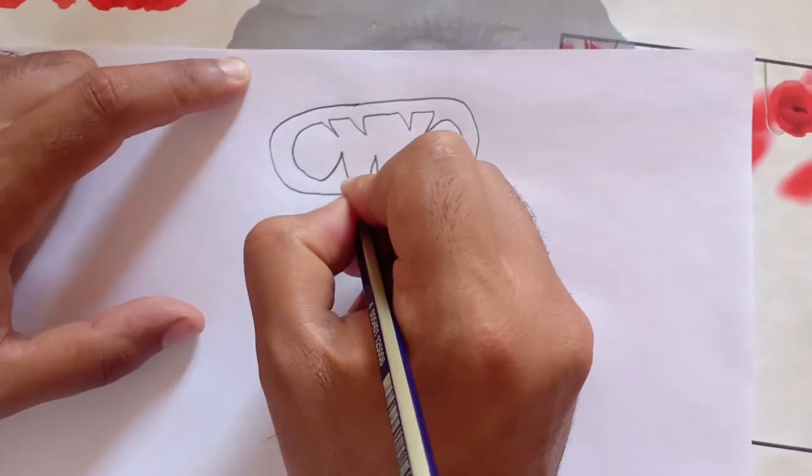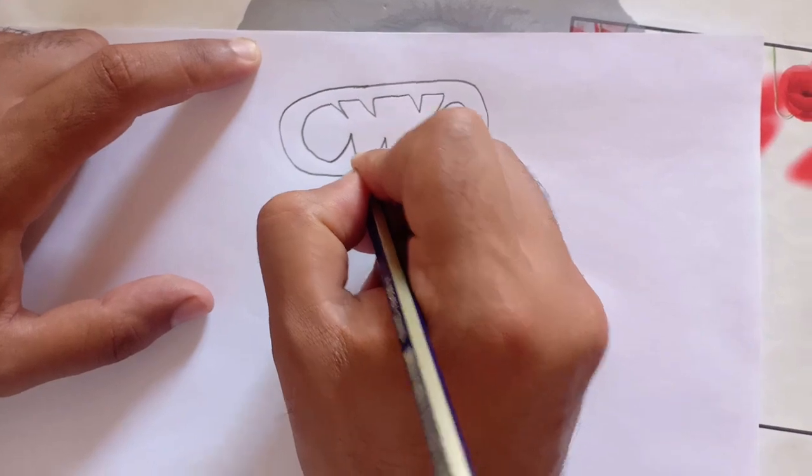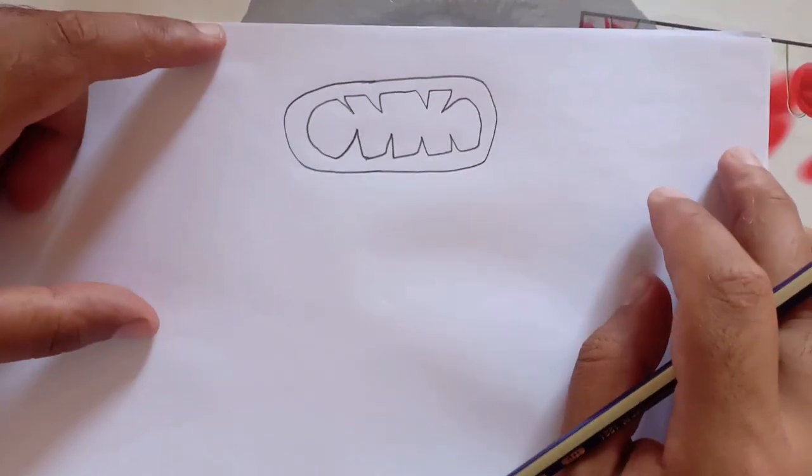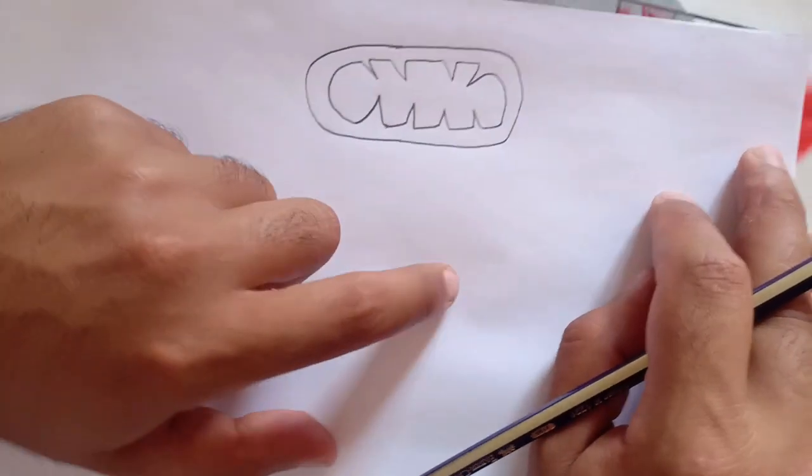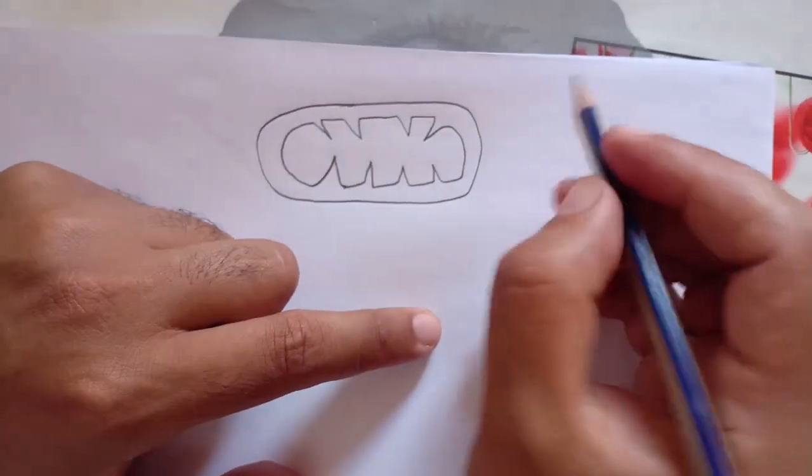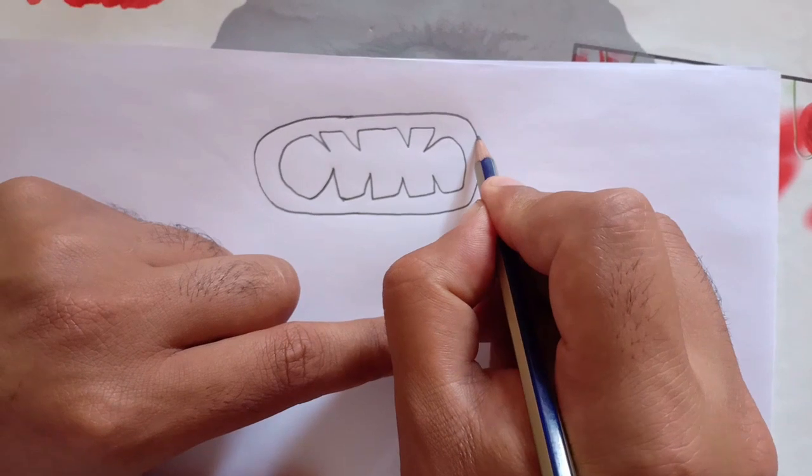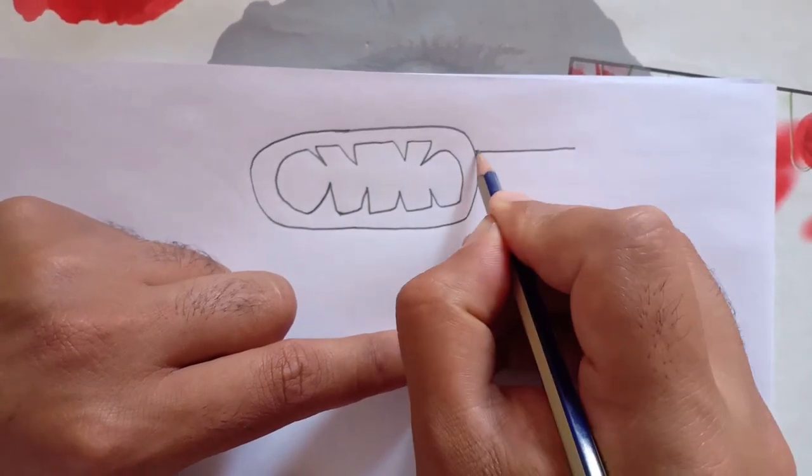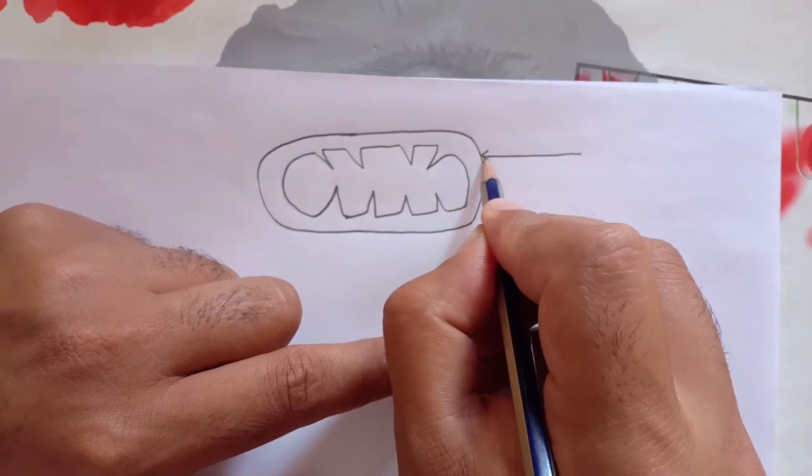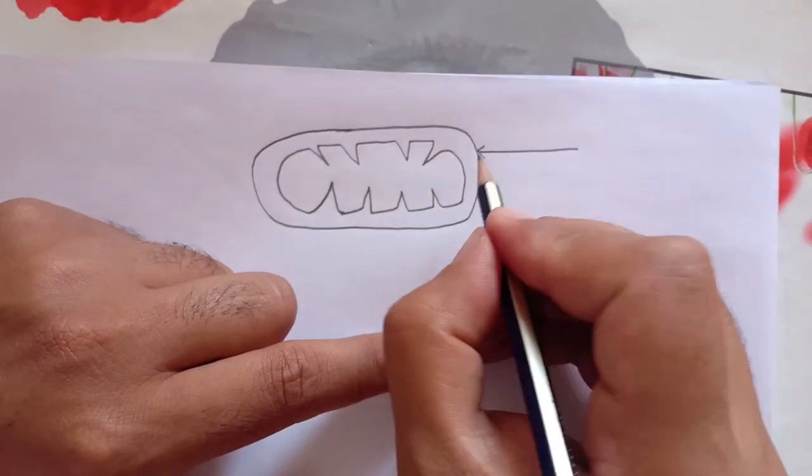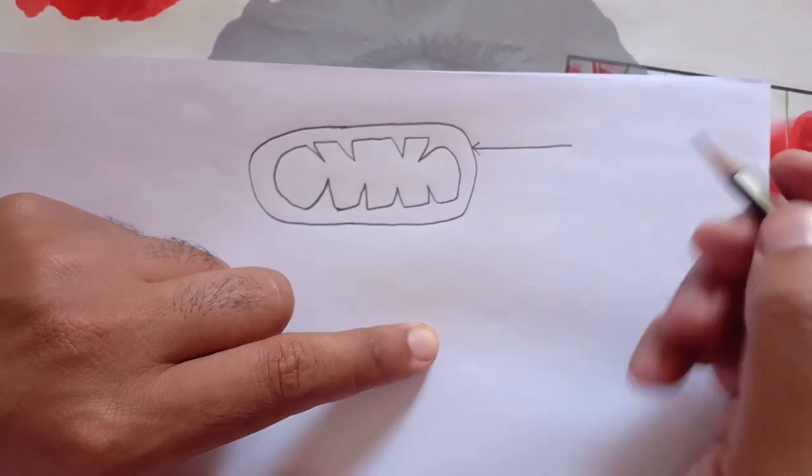Voilà. Maintenant, je vais passer à la réalisation de la légende. Donc je commence par ici. Je dois faire attention. La tête de la flèche ne doit pas franchir la membrane externe. Donc ça ne doit pas franchir la membrane externe.